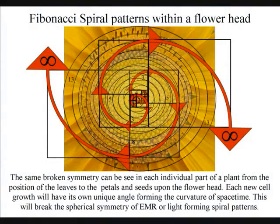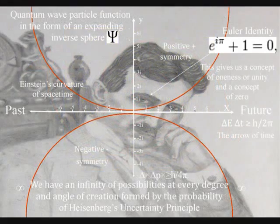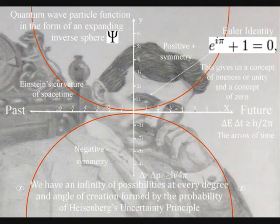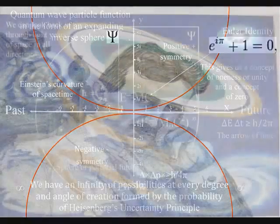Tesla was critical of Einstein's relativity, and he said that space cannot be curved, for the simple reason that it can have no properties.